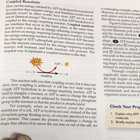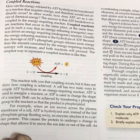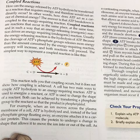Coupled reactions: how can the energy released by ATP hydrolysis be transferred to a reaction that requires energy, and therefore would not ordinarily occur? In other words, how does ATP act as a carrier of chemical energy? The answer is that ATP breakdown is coupled to the energy-requiring reaction. Coupled reactions are reactions that occur in the same place, at the same time, and in such a way that an energy-releasing exergonic reaction drives an energy-requiring endergonic reaction. Usually the energy-releasing reaction is the hydrolysis of ATP. Because the cleavage of ATP's phosphate groups releases more energy than the amount consumed by the energy-requiring reaction, entropy will increase and both reactions will proceed.